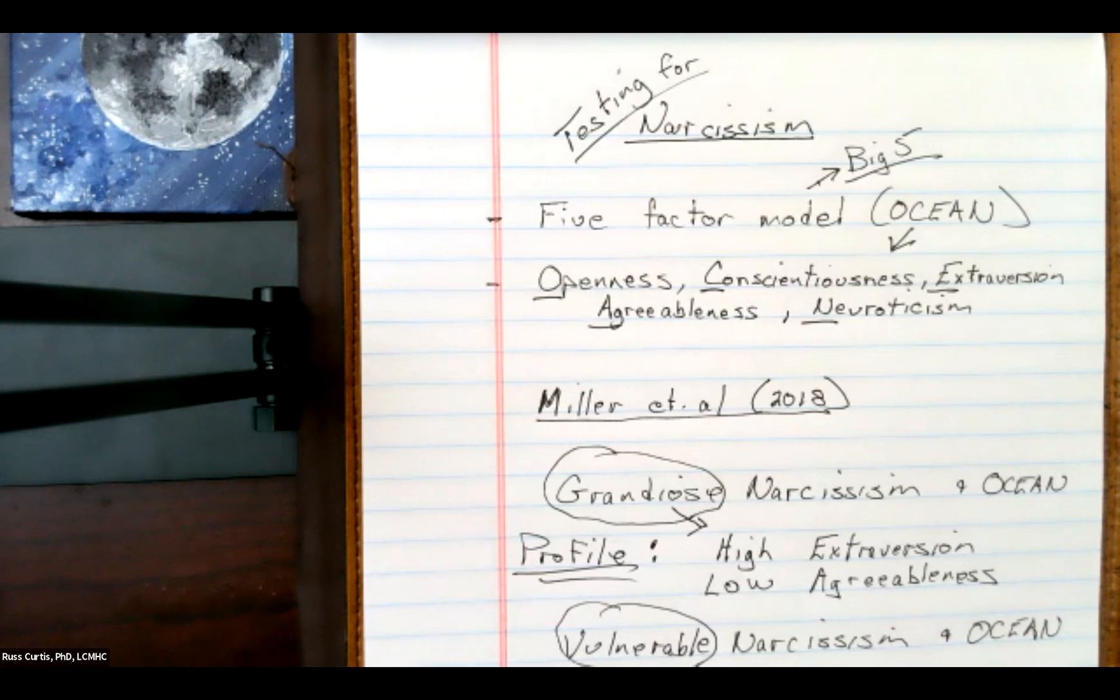openness, conscientiousness, extroversion, not defined as Carl Jung would have defined this. So it's really important to pay attention to this. Agreeableness and neuroticism. So those are the five domains.